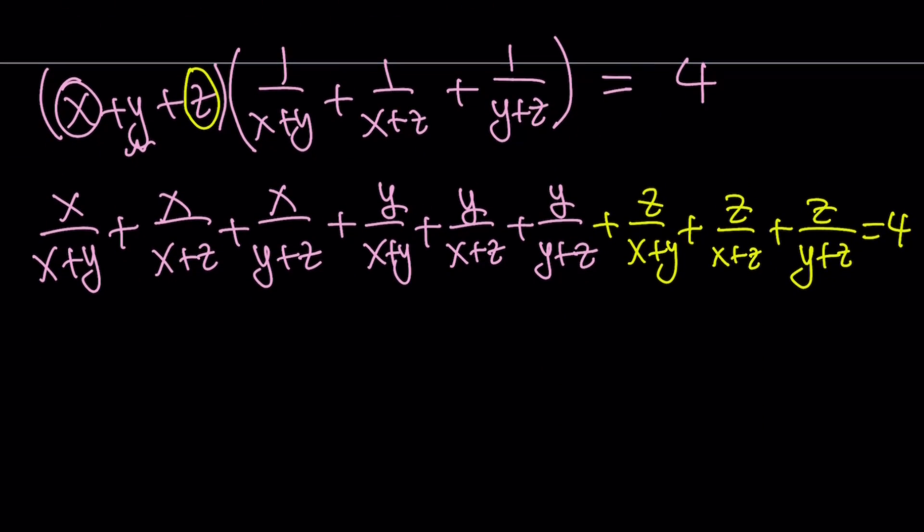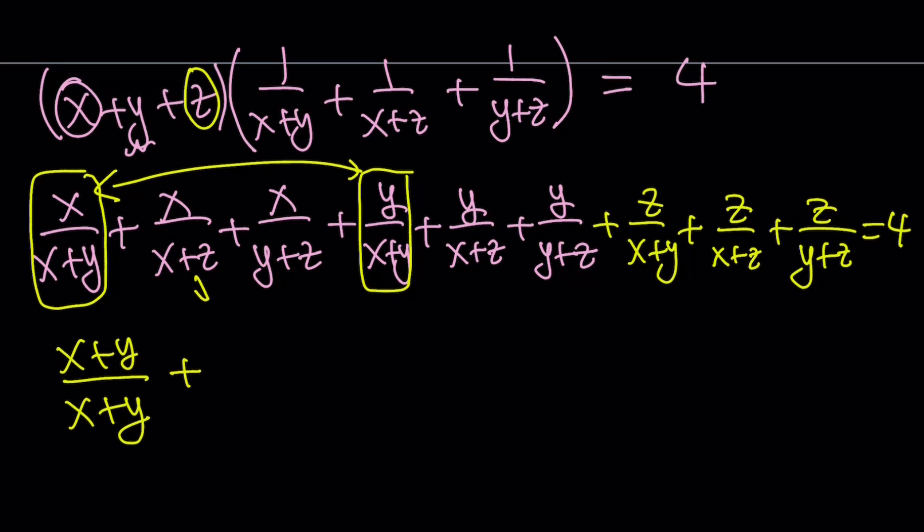Now this kind of looks gibberish or complicated, but we're going to combine these terms in a meaningful way. For example, I'll take x over x plus y and combine it with y over x plus y. And when you add these up, because they have the same denominator, you get x plus y over x plus y, which is equal to 1. How about the other ones? I can take x over x plus z and add it to z over x plus z. So that gives me x plus z over x plus z, which is also 1.